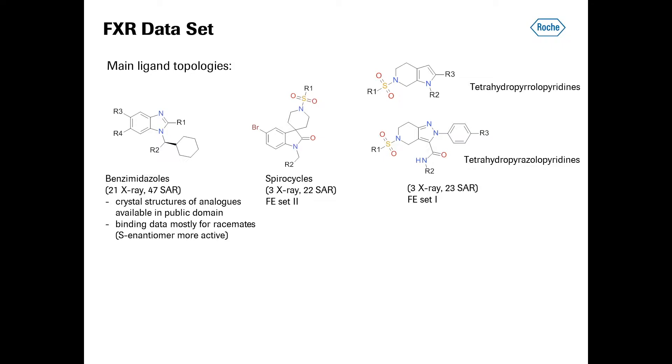Finally, there are two closely related sets of sulfonamide substituted bicyclic scaffolds, tetrahydropyrrolo pyridines and tetrahydropyrazolo pyridines, for which we got three X-ray structures and 23 SAR examples. Part of that data set comprises the free energy subset one.